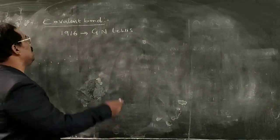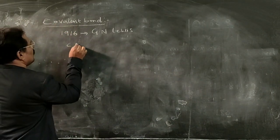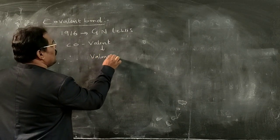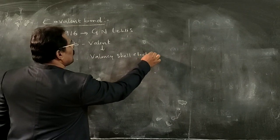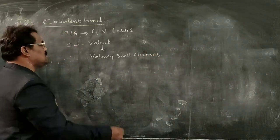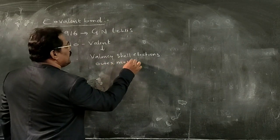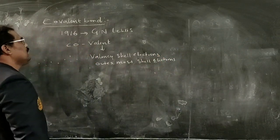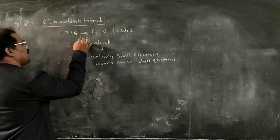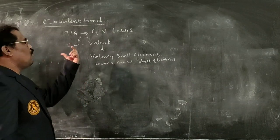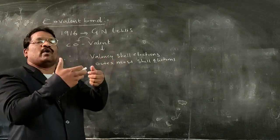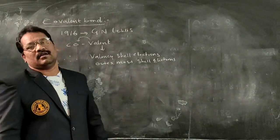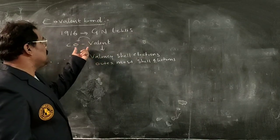The word 'covalent' itself is a combination of two words: co and valent. 'Valent' represents valency shell electrons, also called outermost shell electrons. 'Co-valent' means there is a cooperation or co-existence between the valency shell electrons of two or more atoms of elements, and therefore a bond is formed, called the covalent bond.